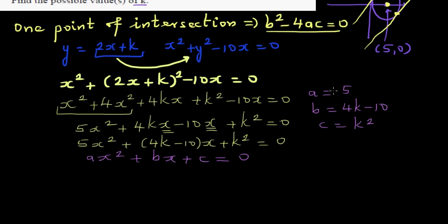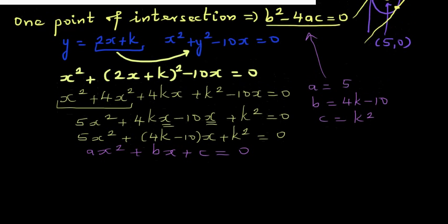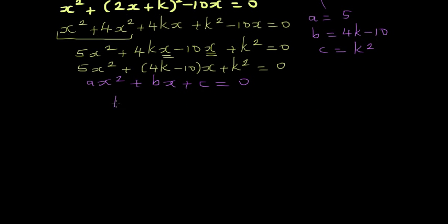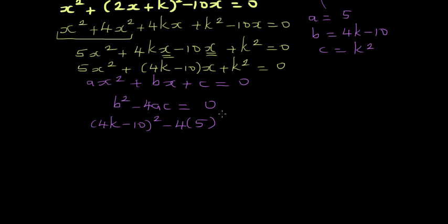Comparing with the standard form ax squared plus bx plus c equals 0, I can say a is 5, b is 4k minus 10, and c is k squared. Since there is only one point of intersection, b squared minus 4ac equals 0. So: 4k minus 10, the whole squared, minus 4 times 5 times k squared equals 0.